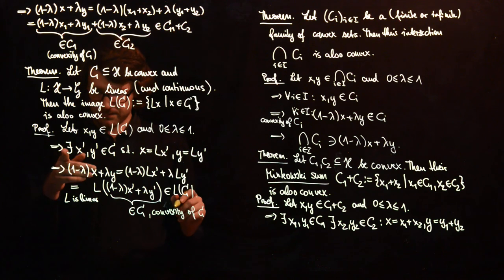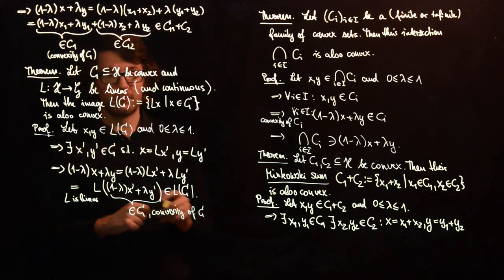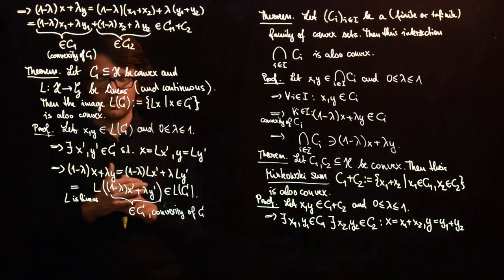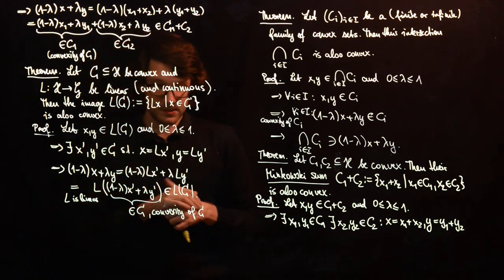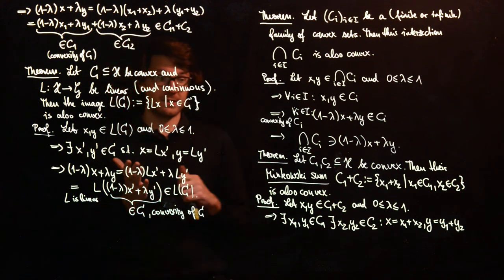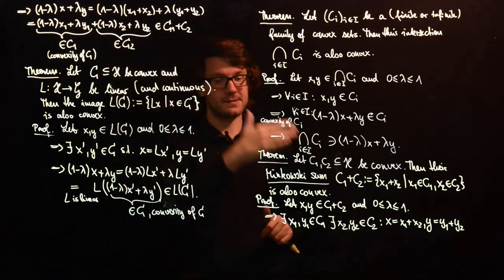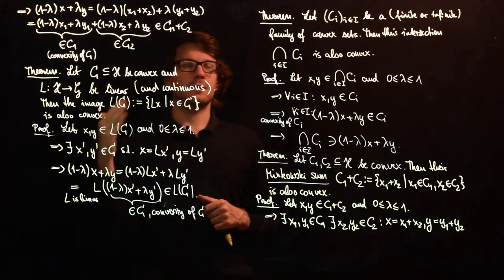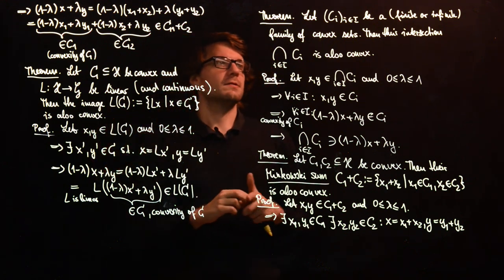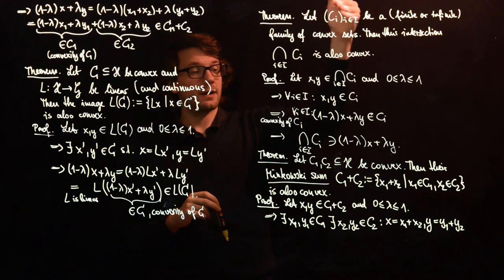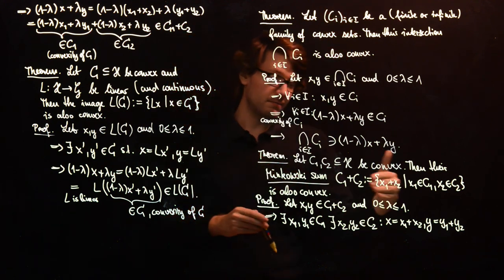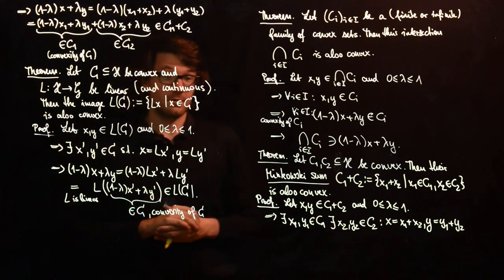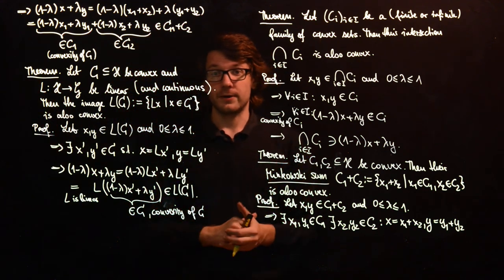We have shown that for arbitrary elements, the convex combination is also in the image, proving convexity. So we have now seen three different ways to construct convex sets from other convex sets: the intersection of an arbitrary collection of convex sets, the Minkowski sum of two convex sets, and the image of a convex set under a linear operator.